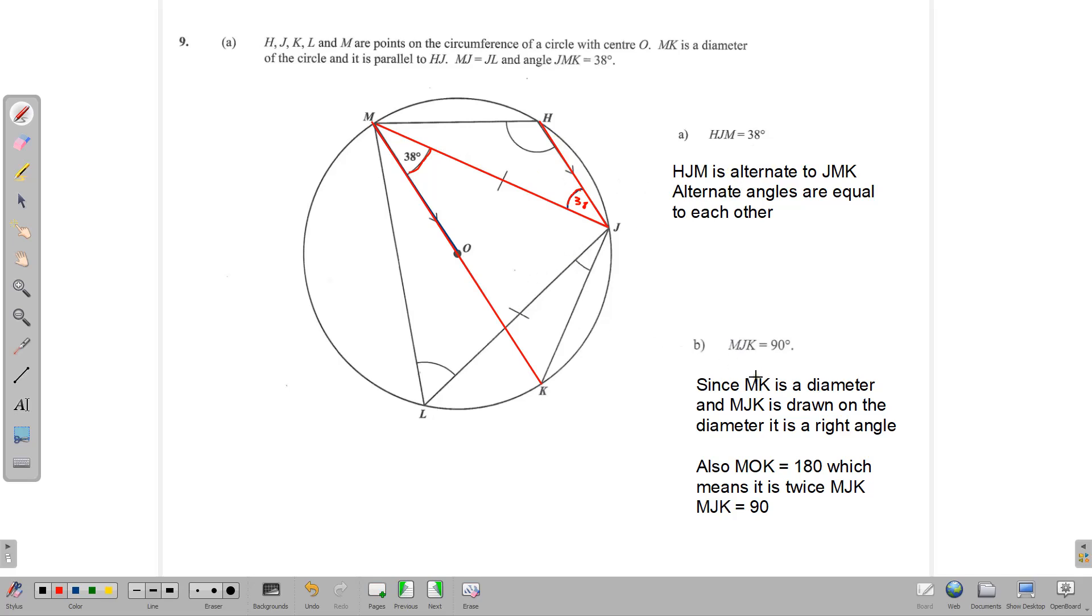The next one, MJK is equal to 90 degrees. If we complete the triangle here, then we realize that we have a right angle triangle here. To make sure that we do, we realize first that MK is a diameter, and this angle MJK is drawn on the diameter. And because of that, we can say that the angle in the semicircle is a right angle, hence it is 90 degrees.